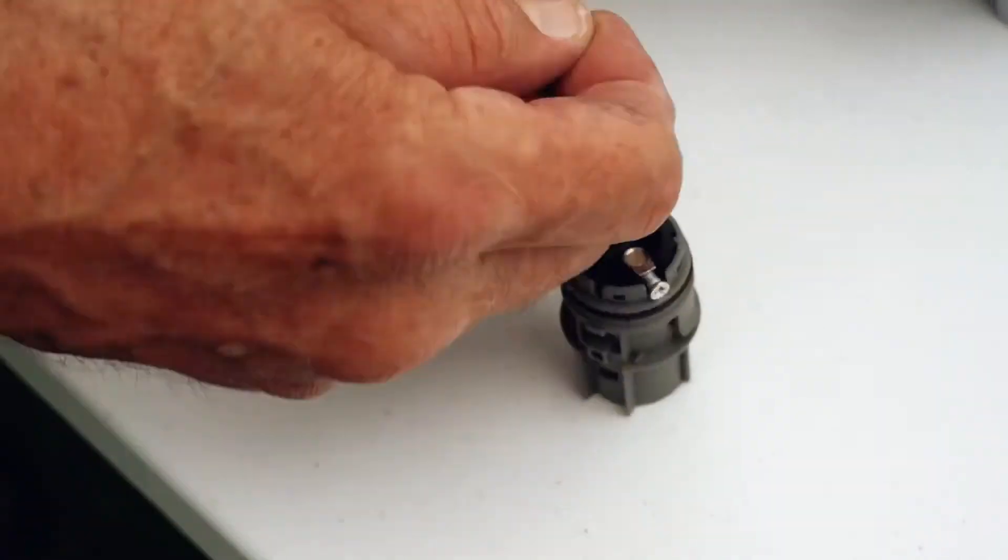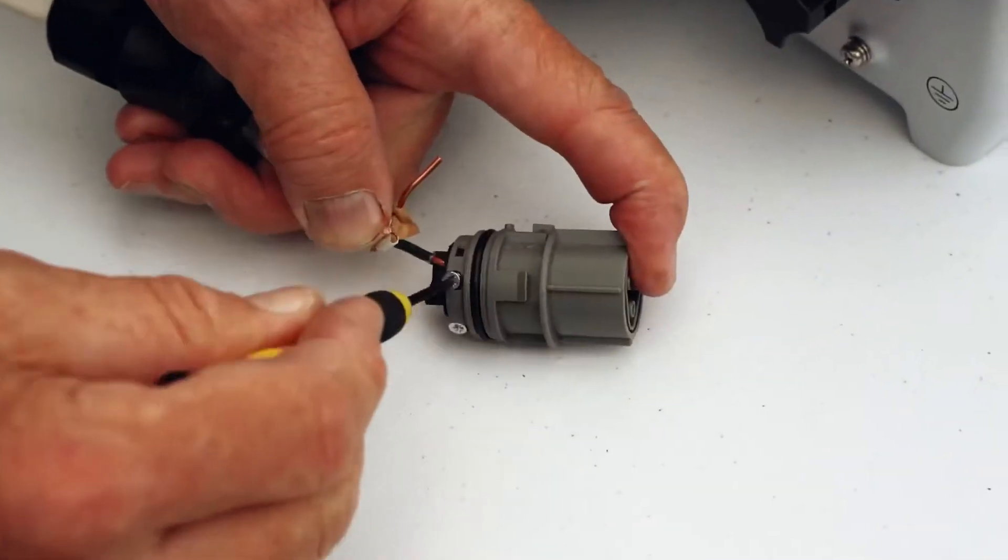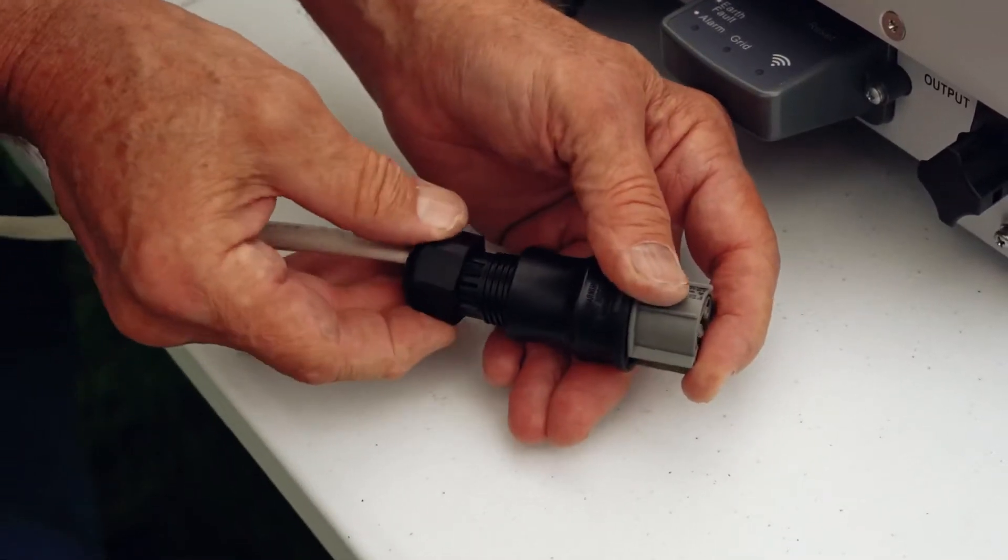Prepare the wiring for the output of AC directly to your grid. Make sure the power is off before connecting.